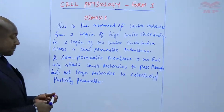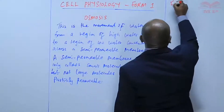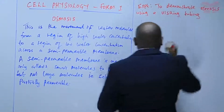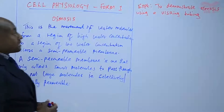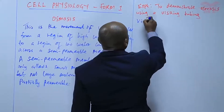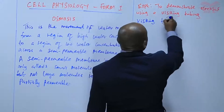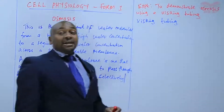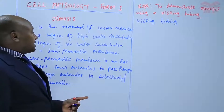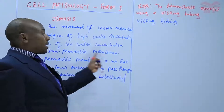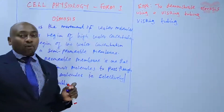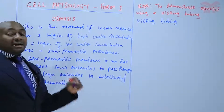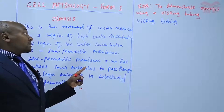We are going to have an experiment to demonstrate osmosis, but before we look at that experiment it is important to understand what a visking tubing is. A visking tubing is a commercial synthetic tube that plays the role of a semi-permeable membrane — it works the same way as the cell membrane of a cell, so the visking tubing, just like the cell membrane, is semi-permeable.